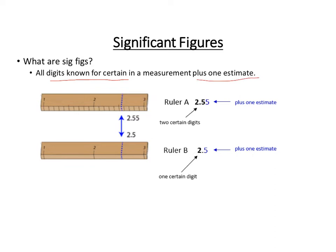For example, if we're looking at the top ruler, we definitely know that we are beyond two, and the 0.5 mark is visible, so we know for sure we're at 2.5. Then we estimate that very last digit to be about halfway, so 0.5. So there's our certain digits and then our estimate — that gives three significant figures.